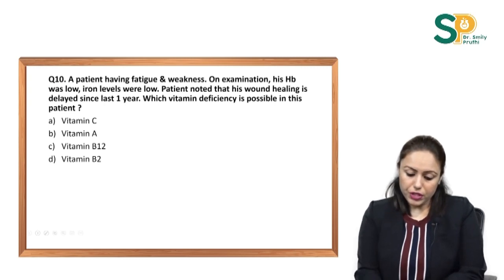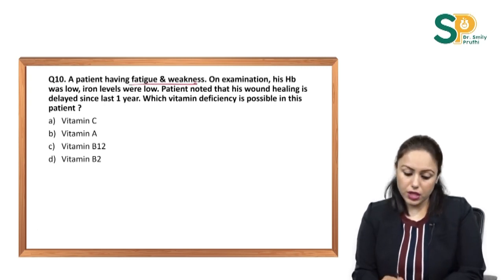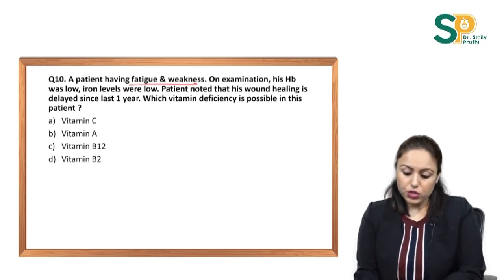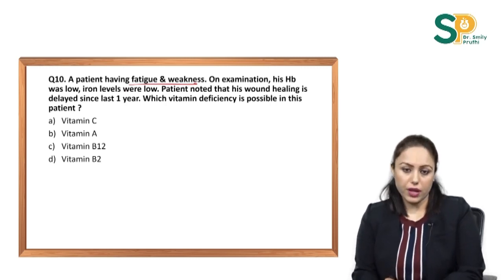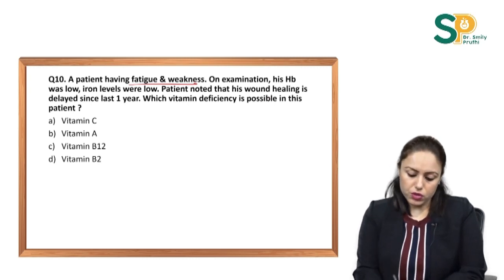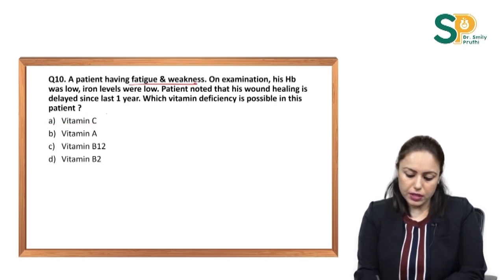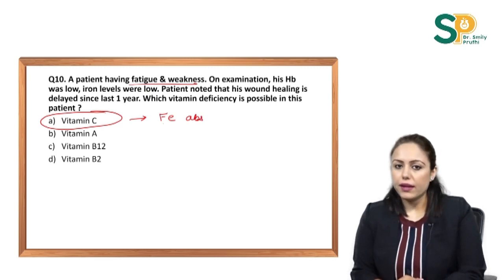Next question: a patient with fatigue and weakness has low haemoglobin and low iron on examination, and also reports delayed wound healing. This is a typical picture of vitamin C deficiency. Vitamin C helps in iron absorption, which is why iron deficiency also occurs in this condition.